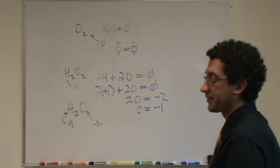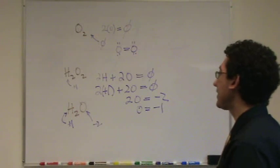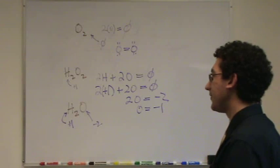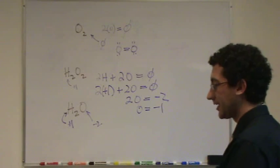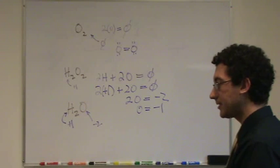But again, they're sharing electrons. So it can vary just like any other thing. And depending on what kind of covalent or ionic bond it has, it will have a different oxidation state. Does that kind of make sense? Okay.